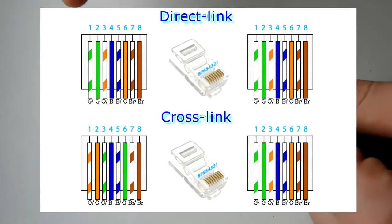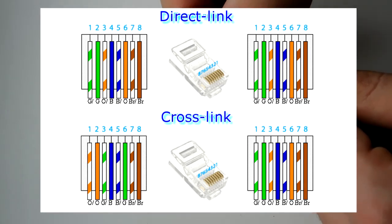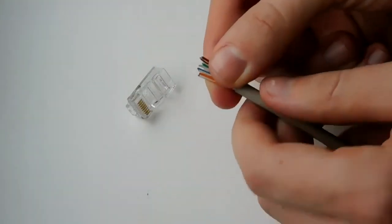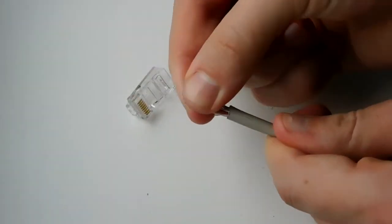Second type is cross connection. We use it if PC connects to other PC. In this case put wires according to this key.